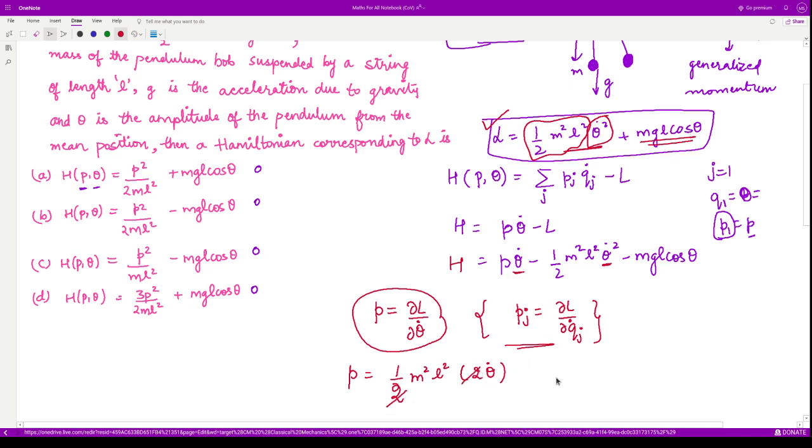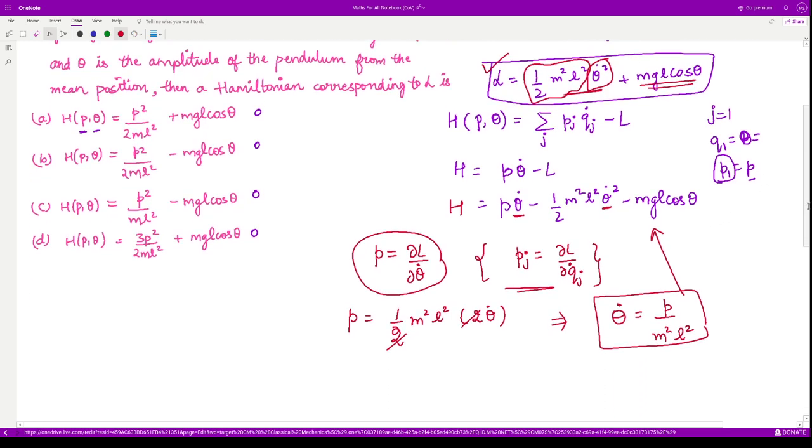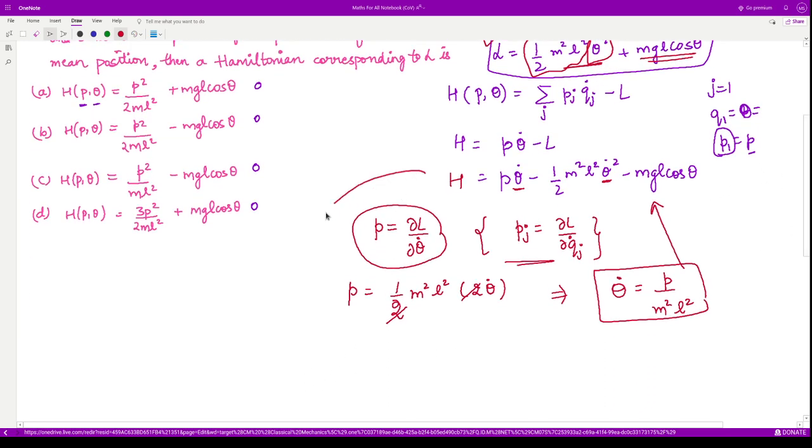So from here, we can evaluate the value of theta dot. It comes out to be p divided by m square l square. So let us substitute this value of theta dot into the corresponding Hamiltonian.